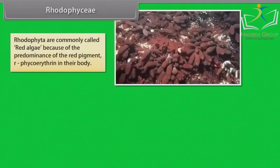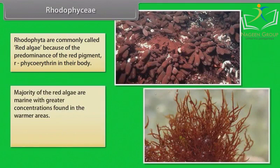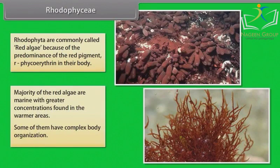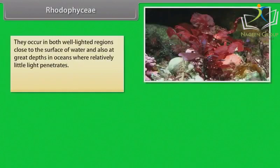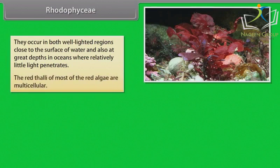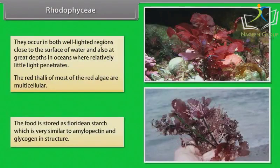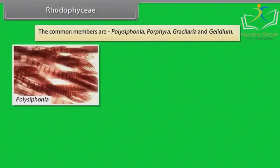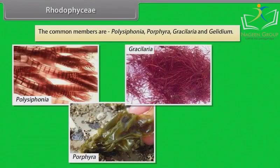Rhodophyceae are commonly called red algae because of the predominance of red pigment phycoerythrin in their body. The majority of red algae are marine, with greater concentrations found in warmer areas, and some have complex body organization. They occur in both well-lighted regions close to the surface and at great depths in oceans where relatively little light penetrates. The thallus of most red algae is multicellular. Food is stored as floridean starch, similar in structure to amylopectin and glycogen. Common members include Polysiphonia, Porphyra, Gracilaria, and Gelidium.